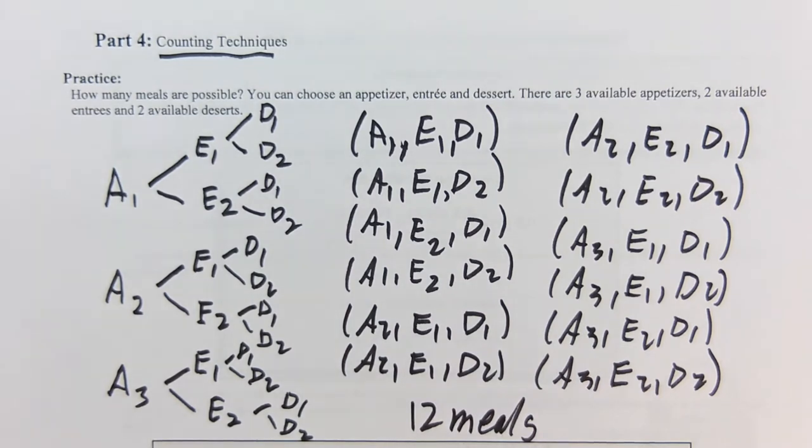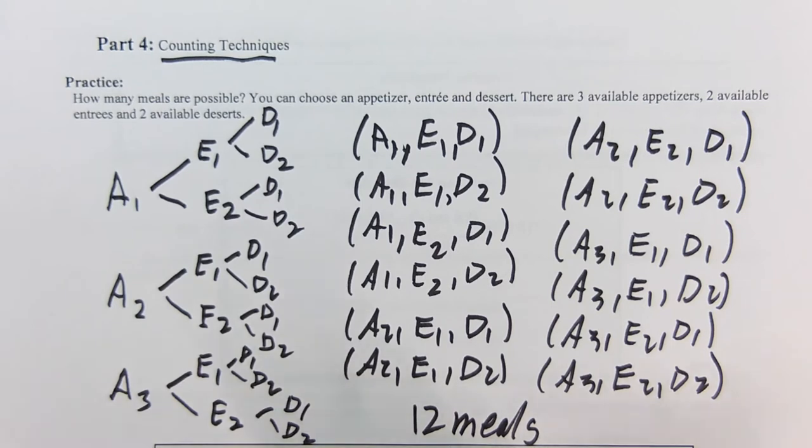Maybe we're on a cruise ship or something. So as we look at the sample space and we count them up, there's got to be a more efficient way of doing this, and there is.